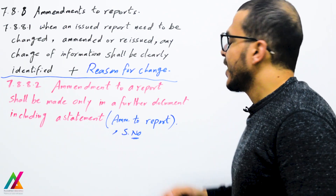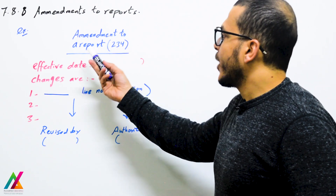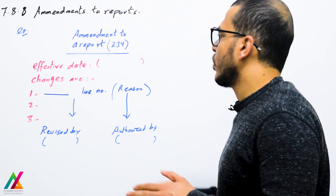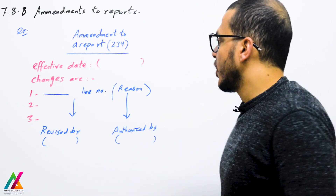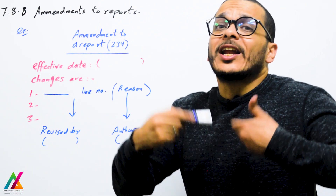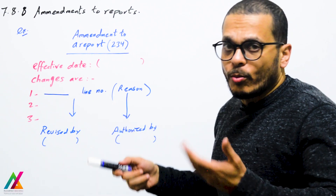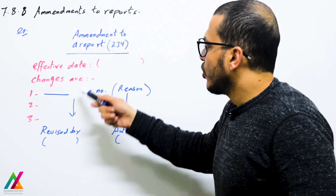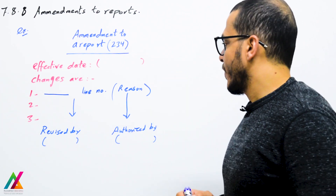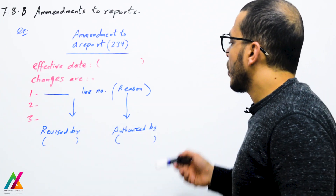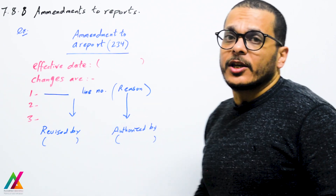The amendment document shall include: the statement 'amendment to report'; the serial number — for example, 'Amendment to Report Number 234'; the effective date when the changes are applied; a list of changes, each with the line number and reason for change; 'revised by' — the analyst or whoever is responsible for the report; and 'authorized by' — the management.